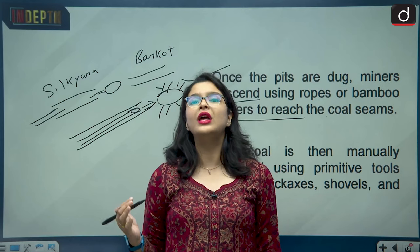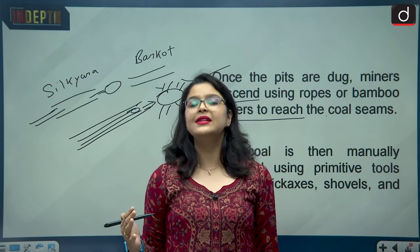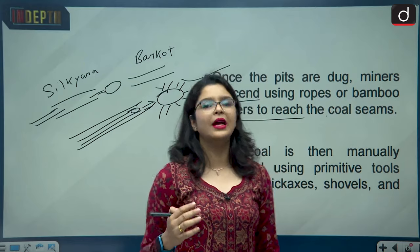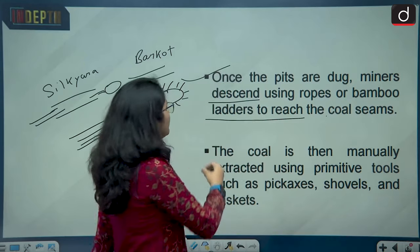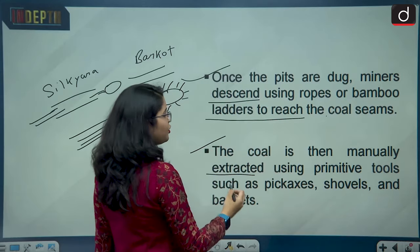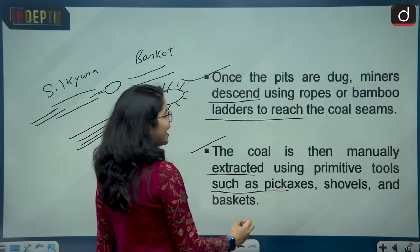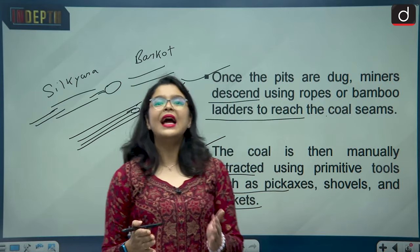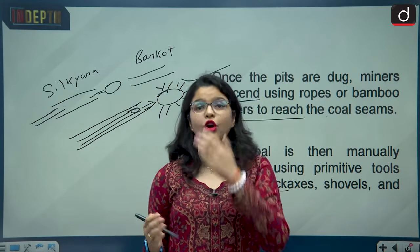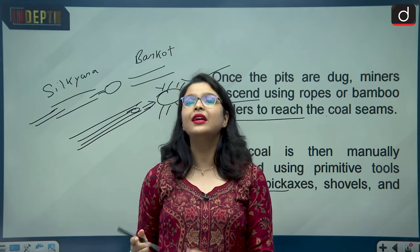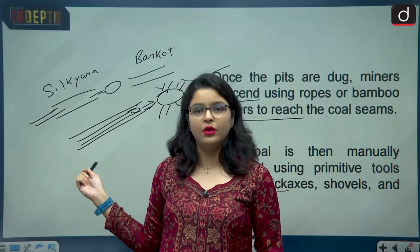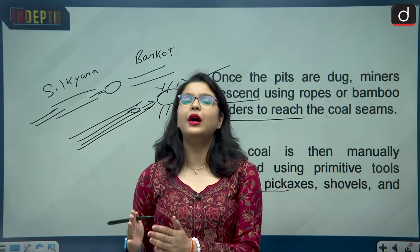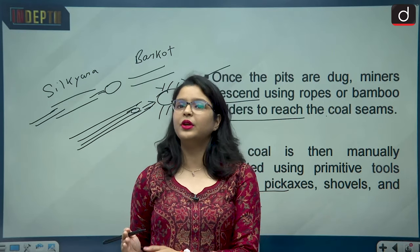This is the rat hole mining technique, which is very prevalent in the state of Meghalaya. The coal is manually extracted using primitive tools such as pickaxes, shovels, and baskets. This is an exact replication of the coal-extracting technique now being applied at the Silkyara-Barkot tunnel rescue operation.